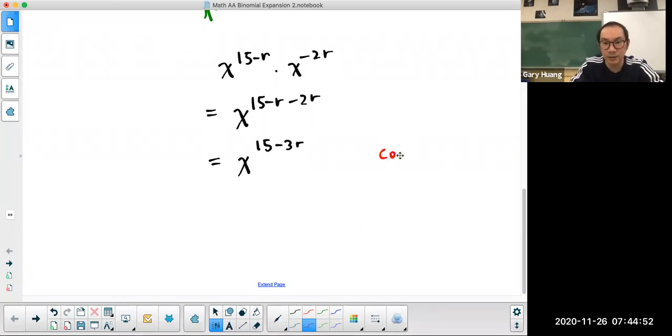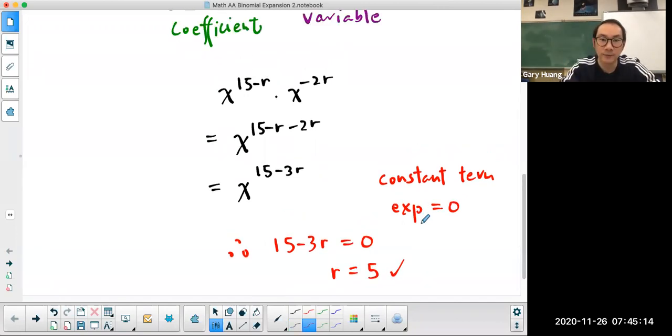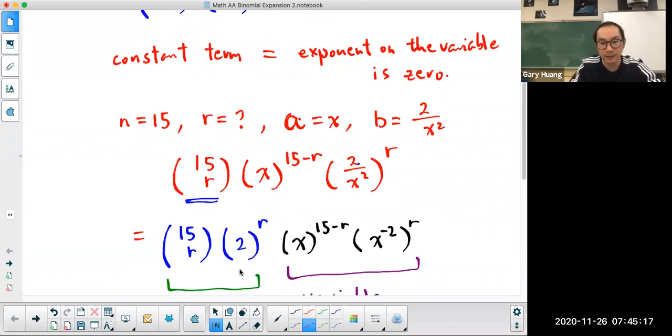And if it's a constant term, then the exponent equal to zero. Therefore, 15 minus 3r must equal to zero, which means r is going to equal to five. Now we know exactly which term we are looking for. We're going to sub that back into the binomial theorem here and find the coefficient, because I know this part is going to equal to x to the power of zero or one. All I need to worry about is this part.